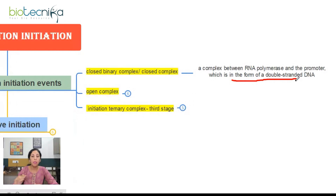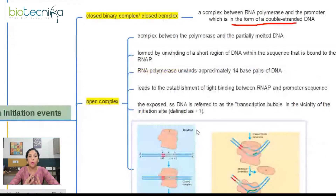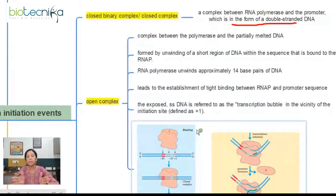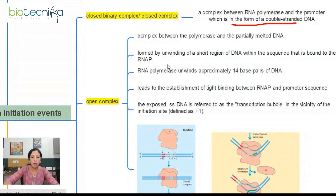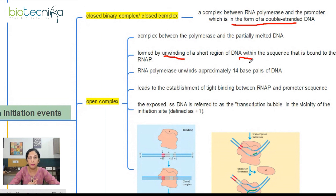When RNA polymerase binds, it will start separating the two strands of the DNA, so the formation of open complex will happen. Open complex is the name given to the complex between the RNA polymerase and the partially melted DNA — the promoter DNA will get melted, meaning the two strands in the promoter region will separate. This is formed by unwinding of a short region of DNA; initially RNA polymerase unwinds approximately 14 base pairs of DNA on the promoter.